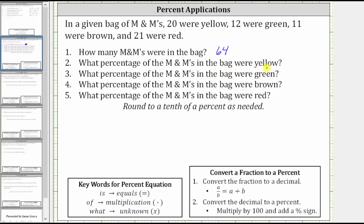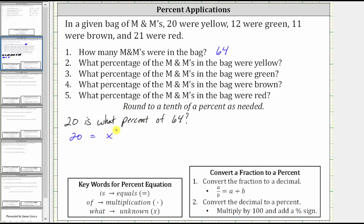To find the percent of yellow M&Ms, we need to answer the question: 20 is what percent of 64? So let's write the percent equation and solve for the unknown using our key words. We have 20; 'is' means equals. Next we have 'what percent,' which represents the unknown, so we use a variable — let's use X. And then we have 'of 64'; 'of' means multiplication, giving us times 64.